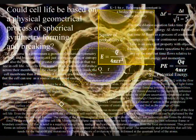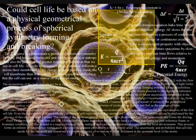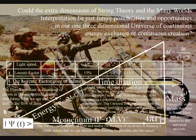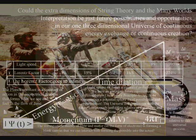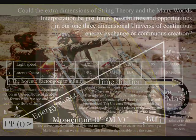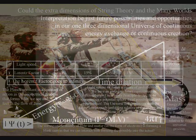It is because this theory uses the holographic principle that we only need three dimensions and one variable in the form of the continuum of time. The extra dimensions of string theory are just future possibilities and opportunities in our one three-dimensional universe of continuous creation.